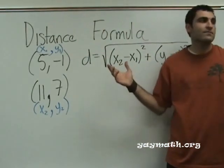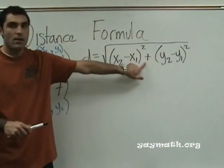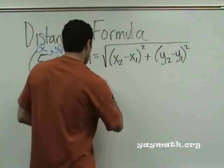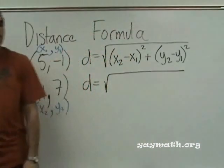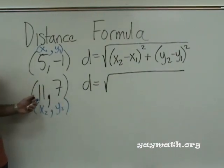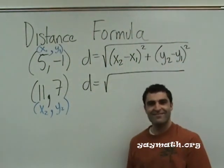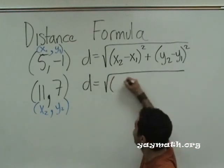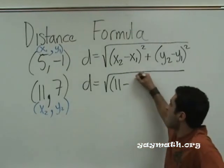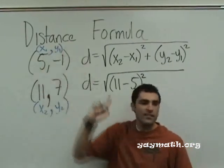Now we plug in and we're done. D equals long square root. 11 minus 5. 11 is x2, minus 5 is x1.